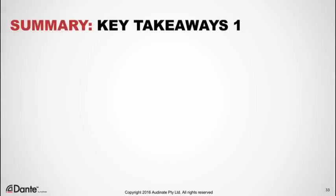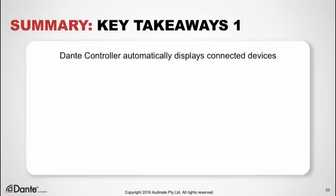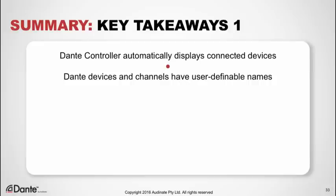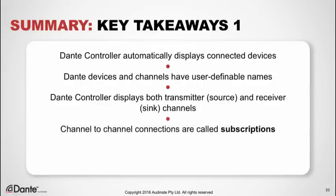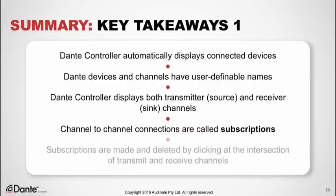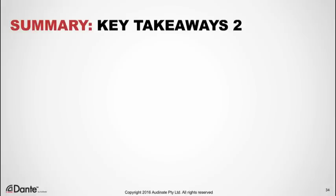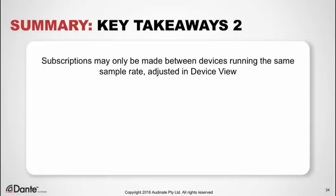Let's summarize with a few takeaways. First, Dante Controller automatically discovers and displays connected devices. Dante always displays devices with user-definable names. For each device, Dante Controller displays both transmitter (or source) and receiver (or sink) channels. Channel-to-channel connections are called subscriptions, and subscriptions are made and deleted by simply clicking at the intersection of transmit and receive channels in the grid routing view. Subscriptions may only be made between devices running at the same sample rate and bit depth, or encoding — and sample rate and encoding are adjustable within manufacturer's limits in the device view.